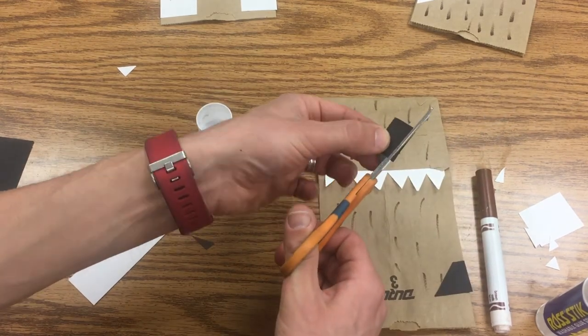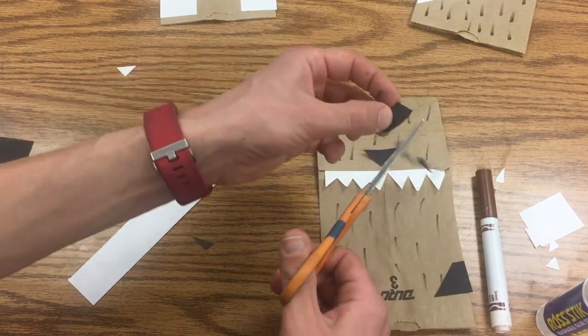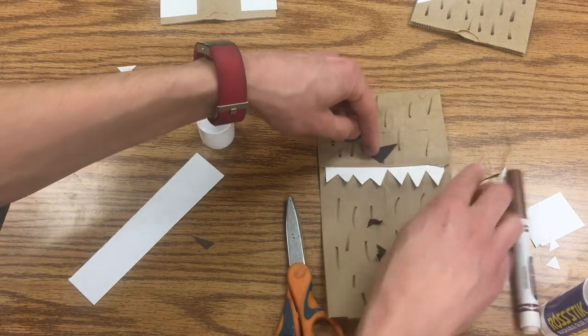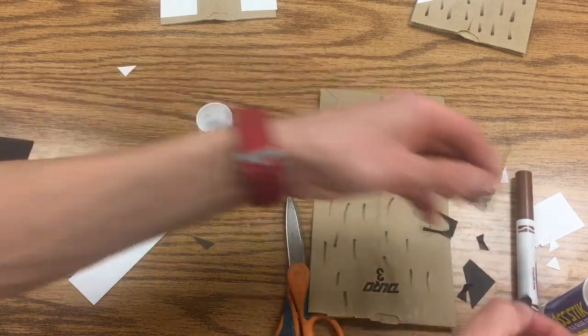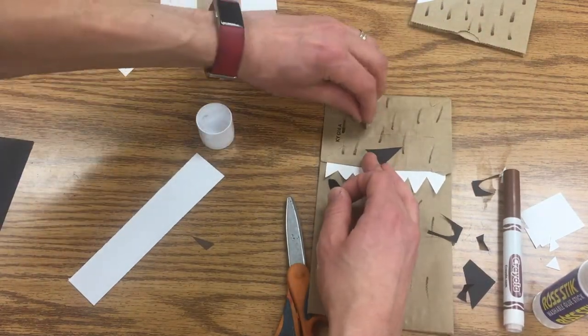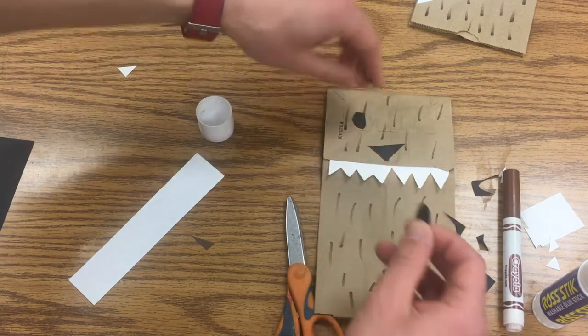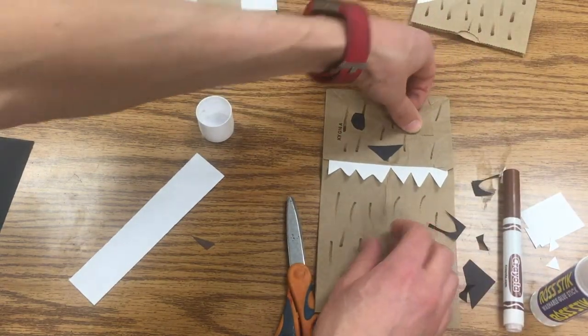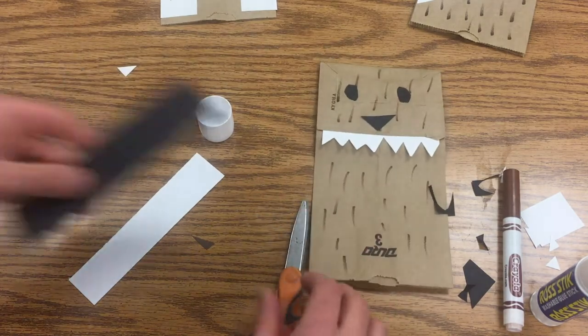and I'm just gonna kind of turn as I cut and I end up with two of the same size. I'm gonna pop those on there for his eyes. Next I'm gonna make his little belt, so